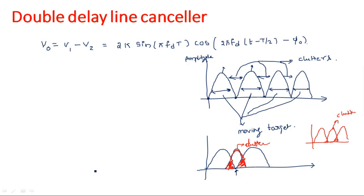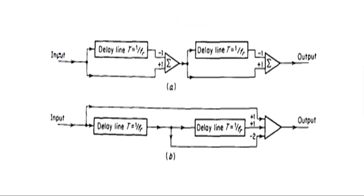Let us see how the double delay line canceler works and what its block diagram looks like. We can draw the double delay line canceler in two ways. In double delay line cancellation, we apply the delay two times — the output of the receiver passes through the delay line canceler two times. The first delay line canceler and the second delay line canceler are cascaded. We can use either diagram, and I will explain how these two are equivalent.